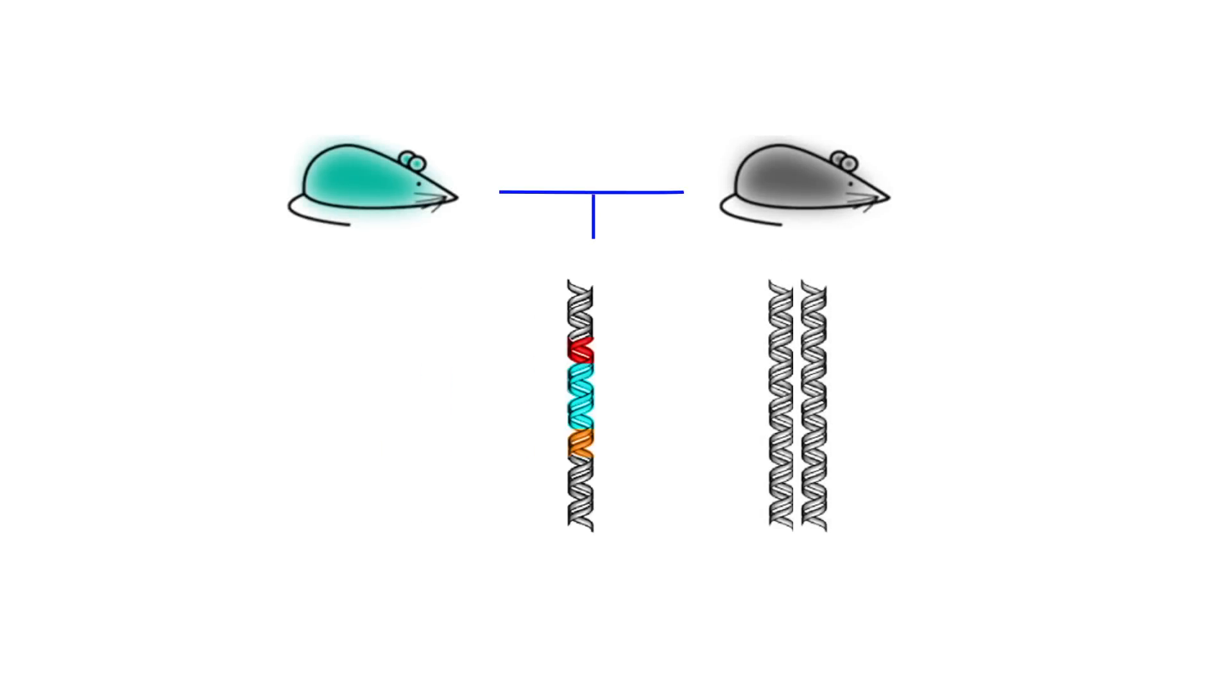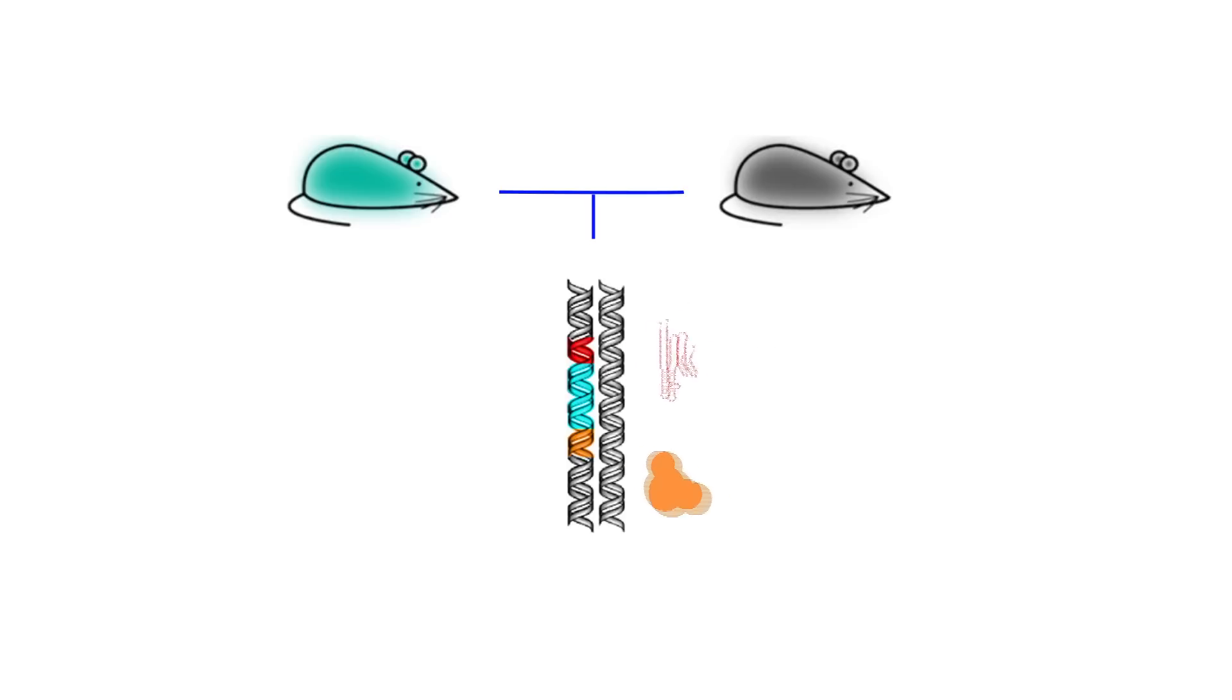When an organism carrying the gene drive mates with a wild counterpart, the offspring inherit one altered copy and one original copy of the target gene. The guide RNAs then direct Cas9 to cut the original copy, which is repaired by copying the altered gene and gene drive sequence in its place.